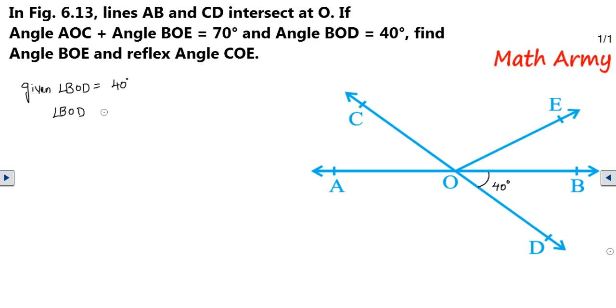Now, angle BOD is, guys, angle BOD is vertically opposite to which angle? AOC. Guys, angle BOD is vertically opposite to angle AOC. And where is angle AOC? This one. Always vertically opposite angles will always be equal. You don't forget that.